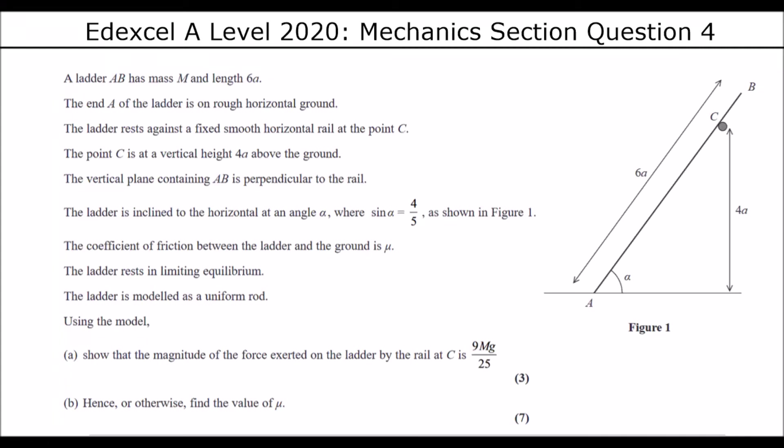A ladder AB has mass m and length 6a. The end A of the ladder is on a rough, so friction, horizontal ground. The ladder rests against a fixed, smooth, so no friction, horizontal rail at C. C is a vertical height 4a above the ground.